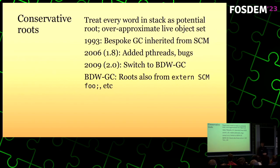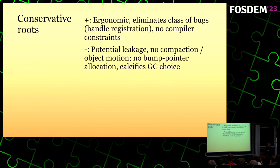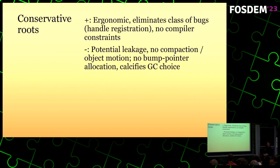A nice thing about the Boehm collector is it scans not only stacks but also static data segments and pthread keys — it tries to find all the roots it might possibly find. With conservative collection there are some real advantages. It is very nice to program with: when working on web browsers with precise roots, getting the handles right is a pain. You can have bugs where you forget to register the location of a value and everything blows up only sometimes, depending on when the GC runs. It also doesn't constrain the compiler.